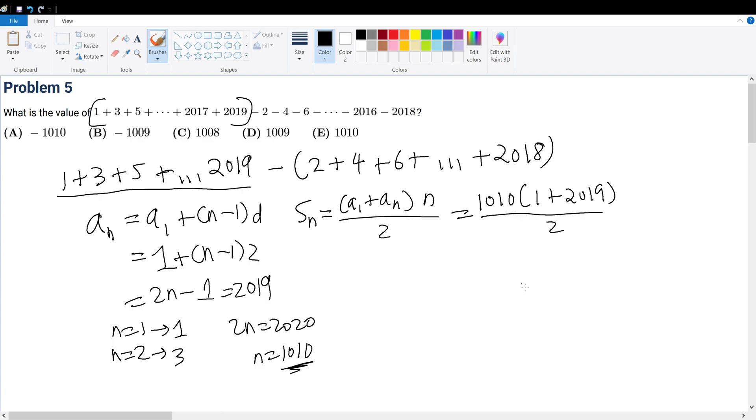For now, just leave it as is because we are still going to be doing the summation for all the evens and we can simplify the fraction all in one. What is the equivalent of 2 plus 4 plus 6 all the way to 2018?